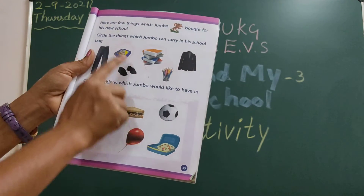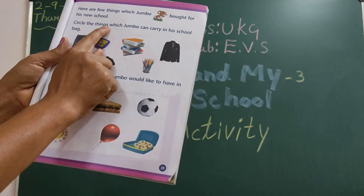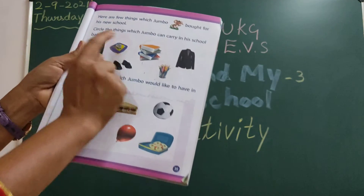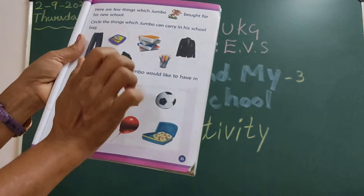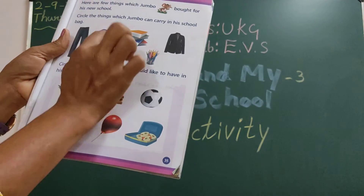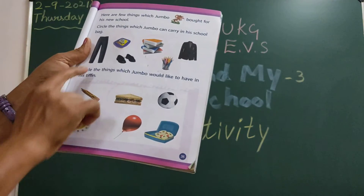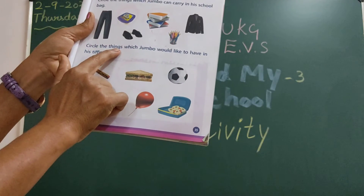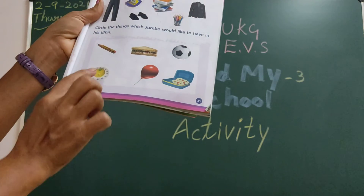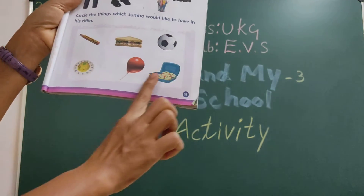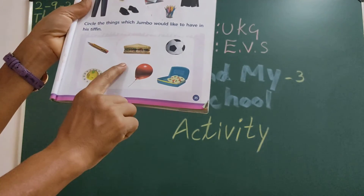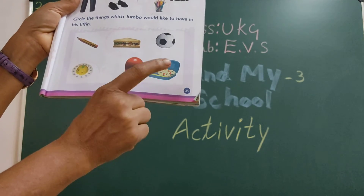Next, circle the things which Jumbo can carry in his school bag — for example, lunch bag, books — like this, you have to circle it. Next, circle the things which Jumbo would like to have. Here they gave so many pictures: ball, sandwich, pencil, like this. So which one do you have to keep in your lunch box? You have to circle it.